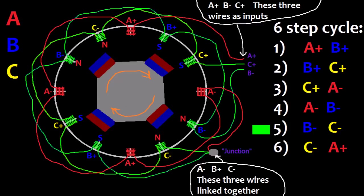Fifth step is B minus C minus. Plus signal flows in the B minus through the B coils to the junction. Plus signal flows from the junction to the C minus wire, reverse direction through the C coils and out the C plus wire to the negative power supply.